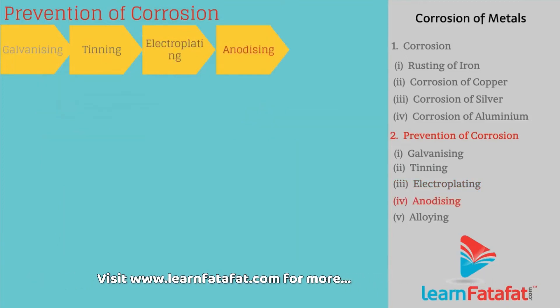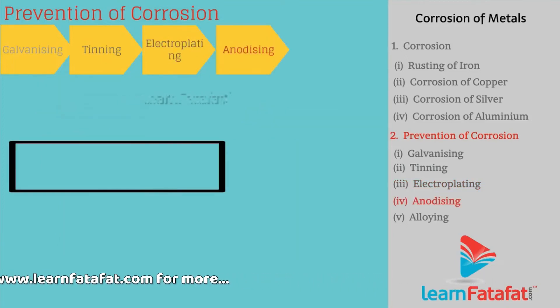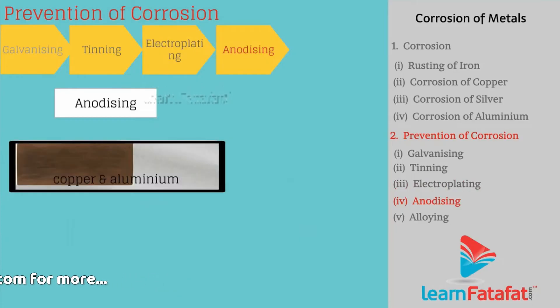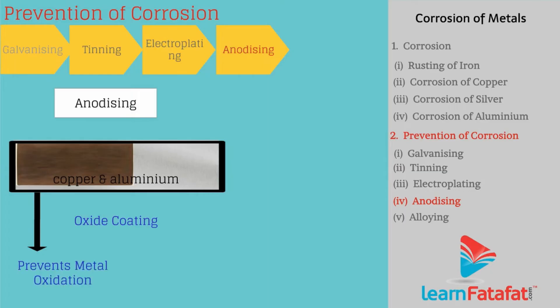Anodizing. In this method, metals such as copper and aluminium are coated with a thin, strong layer of their oxide. This oxide layer prevents further oxidation of the metal.